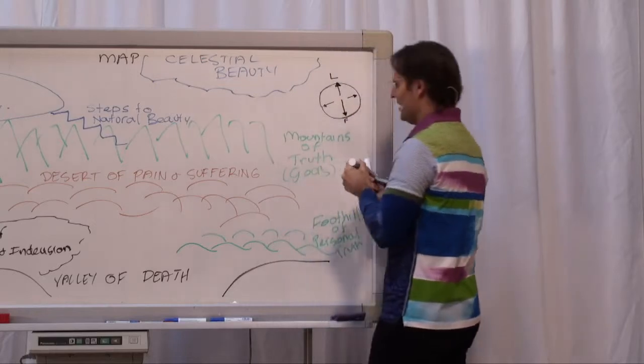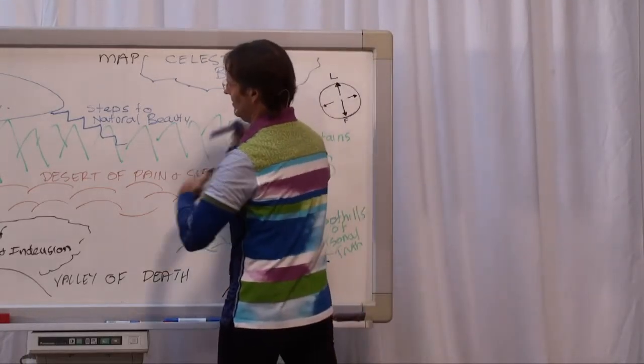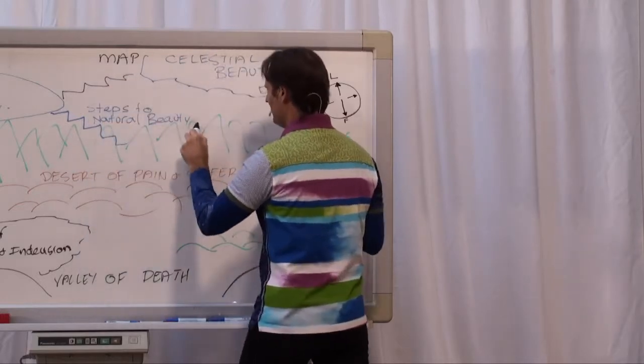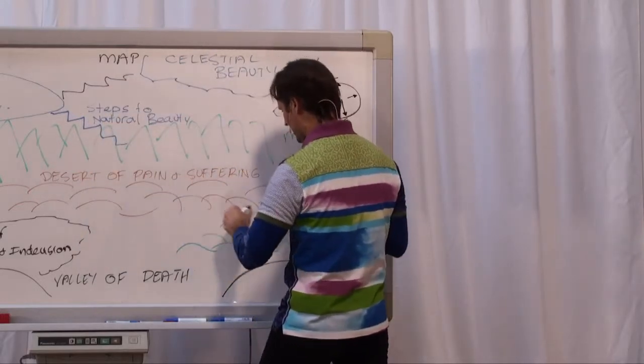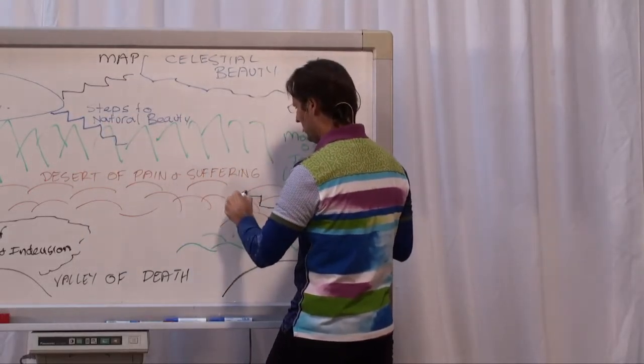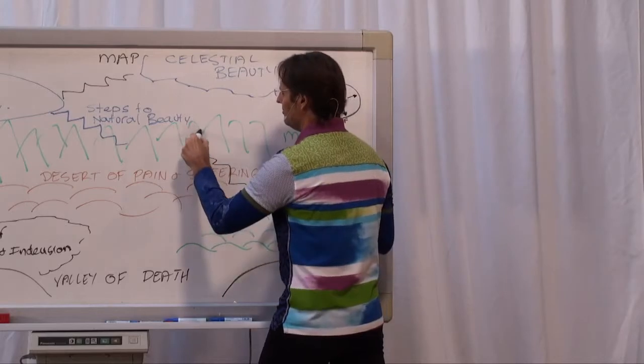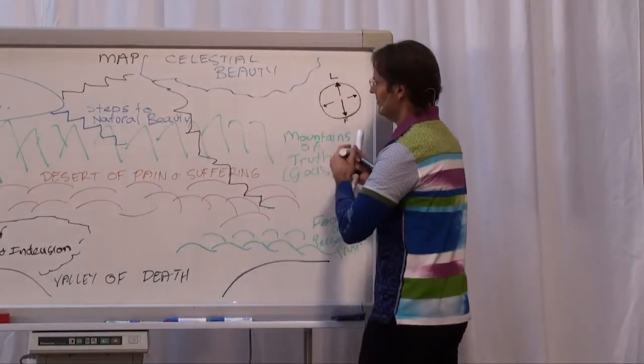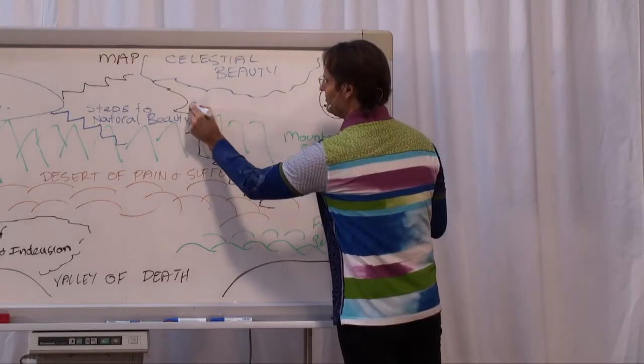And there's another staircase, some of which comes from the staircase of natural beauty, but some also come from right way down here, all the way up. So we've got the celestial staircase.